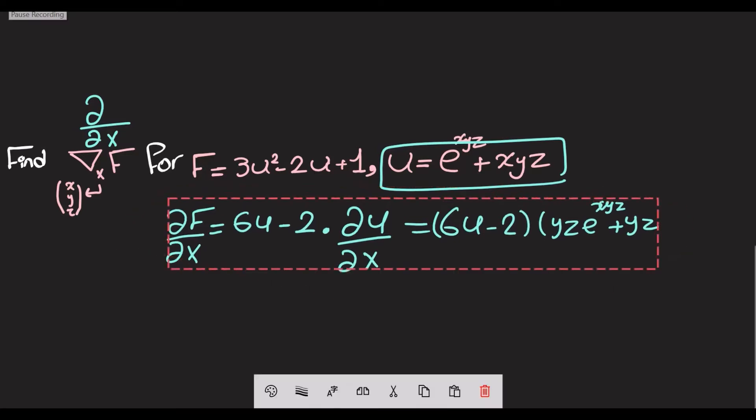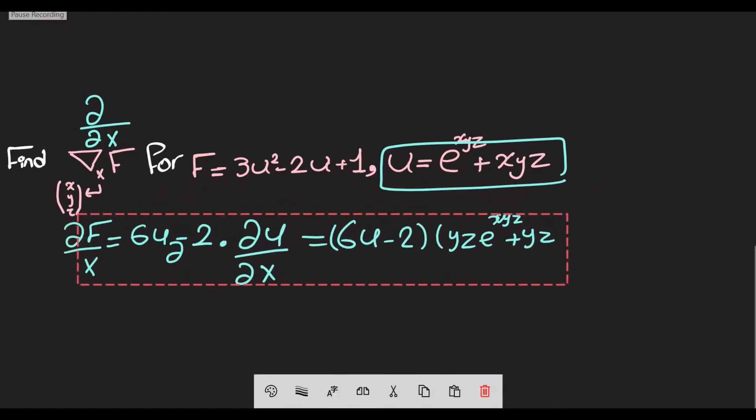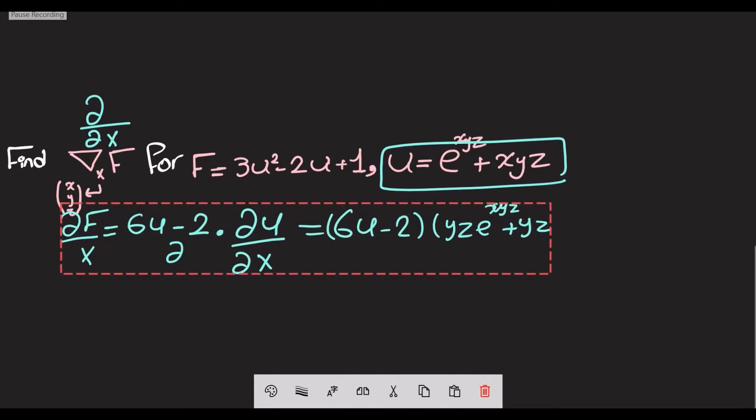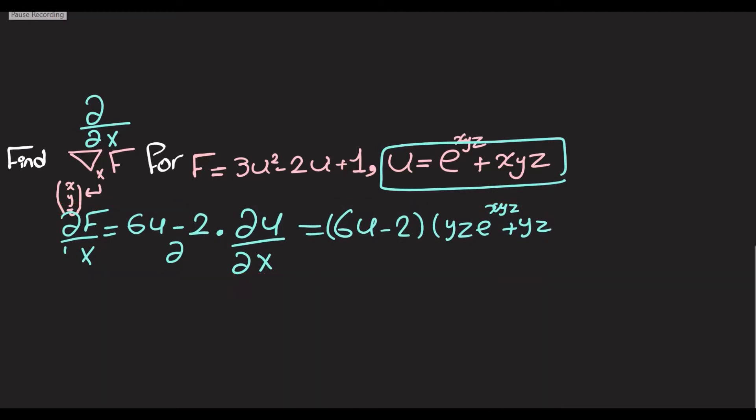With respect to y is going to be xz·e^(xyz) + xz. And with respect to z, it's going to be xy·e^(xyz) + 1. So then you can sub this in here and multiply this everywhere to get the final row vector.